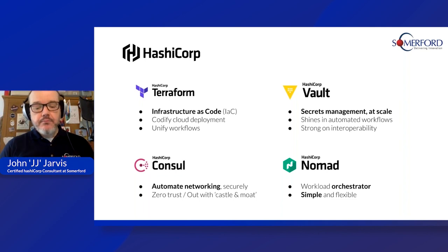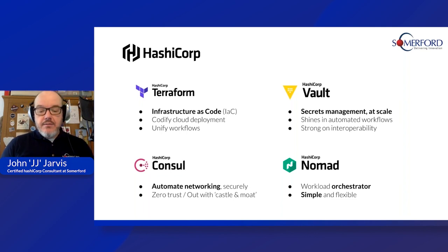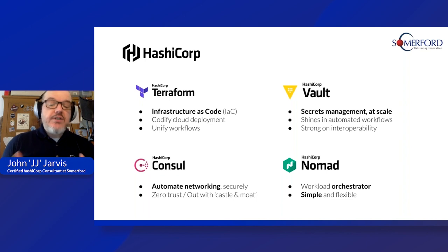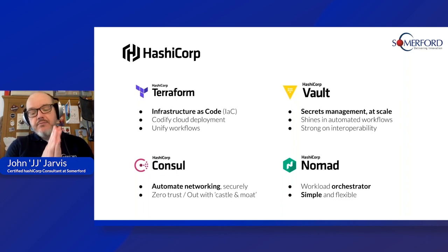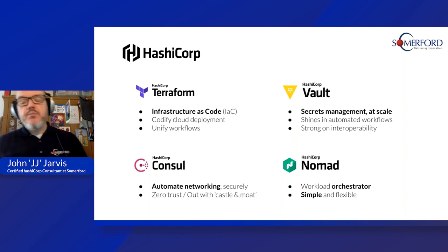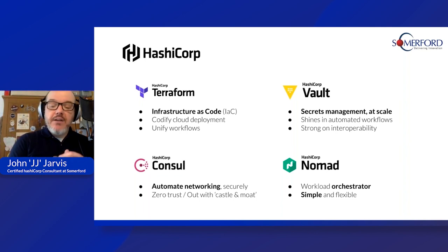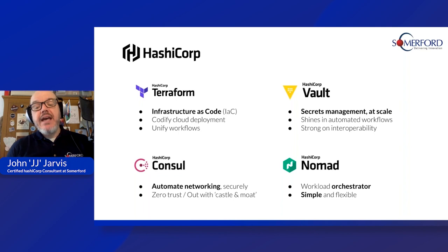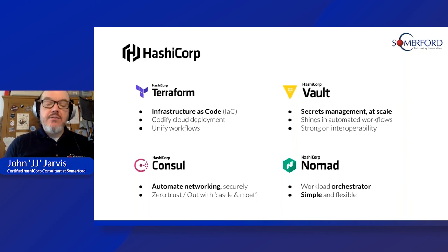Third, Consul — bottom left. This is about underpinning all those workloads and applications in a dynamic fashion. This cloud infrastructure that you've codified and built with Terraform changes at pace, and that means your networking needs to keep up. Support tickets for updating firewall rules are out and automated service discovery is in. Finally, Nomad — an orchestrator like Kubernetes, but focused on simplicity. Nomad is happy to work alongside on-prem and cloud-based workloads too, which comes back to those organizations just starting to dip their toes in cloud.